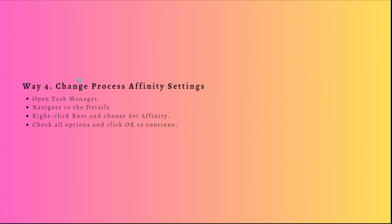Next, what you can do is change the process affinity settings. The fourth way to fix the Rust not responding error is to change the process affinity settings. Here's the tutorial: open your Task Manager, navigate to the Details tab, right-click Rust, and choose Set Affinity.